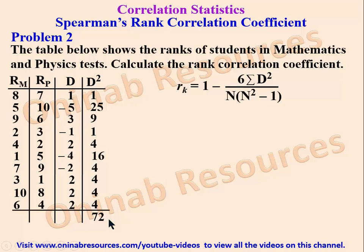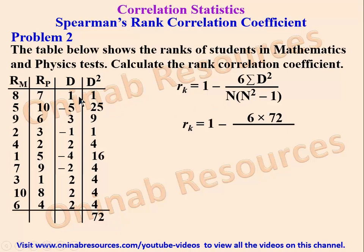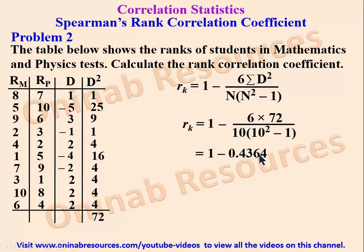Adding the D² column using a calculator gives a summation of D² = 72. We substitute into the formula: rk = 1 − (6 × 72) / (10 × (10² − 1)). There are 10 pairs of data (n = 10). Using a calculator, this gives 1 − 0.4364.